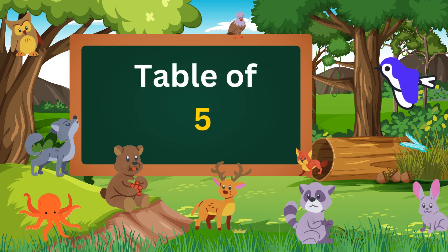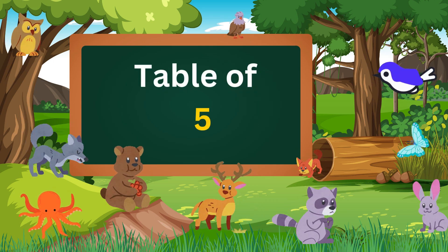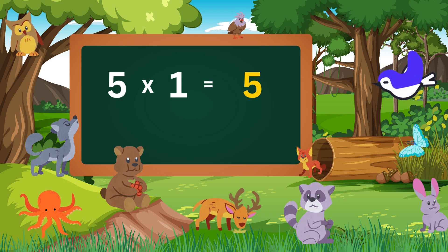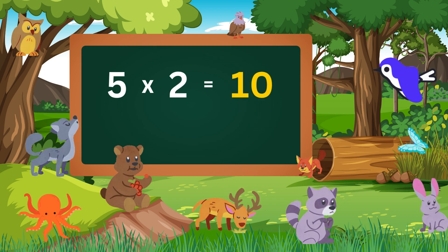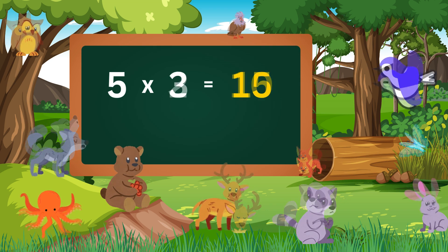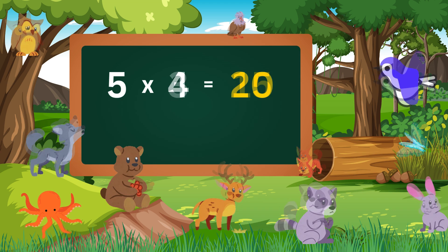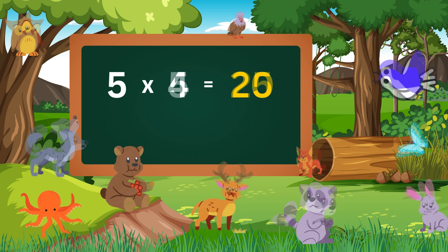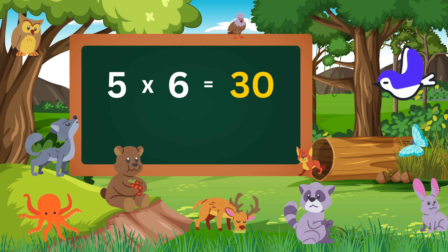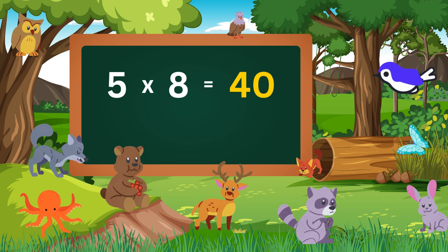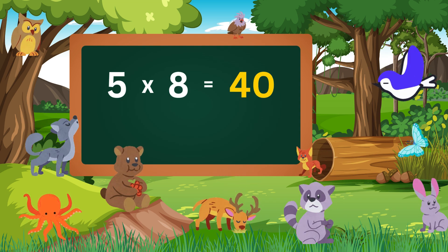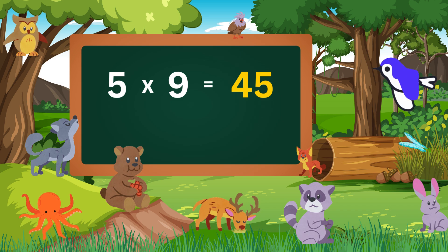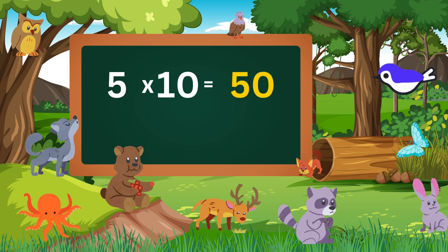Table of five. Five ones are five. Five twos are ten. Five threes are fifteen. Five fours are twenty. Five fives are twenty-five. Five sixes are thirty. Five sevens are thirty-five. Five eights are forty. Five nines are forty-five. Five tens are fifty.